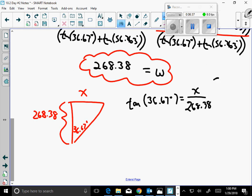We'll go with it and see what we get. So, I want to take 268.38 times the tangent of 36.67. Let's see if we get close to 200 like I got on my... All right. There we go. Thank you. So, X is approximately... And I would go approximately here 199.